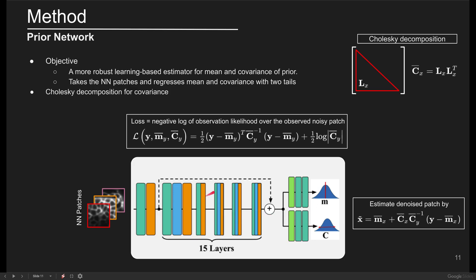From a statistical point of view, the predicted covariance matrix must be symmetric and positive semi-definite. Therefore, we adopt the Cholesky decomposition to ensure this.